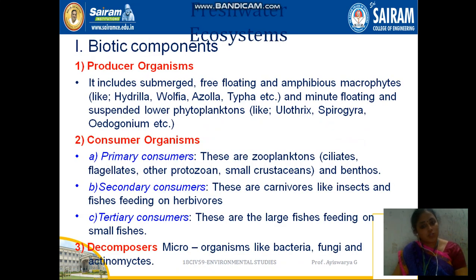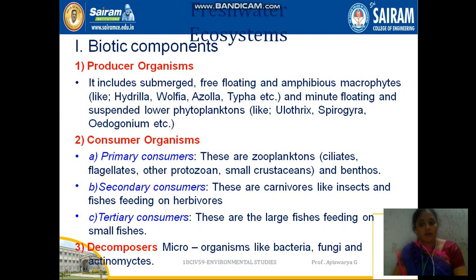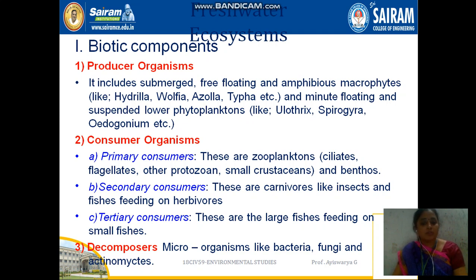The next ecosystem is the freshwater ecosystem, which again has biotic and abiotic components. Producers include submerged and free-floating macrophytes like Hydrilla, Azolla, and Typha, as well as suspended phytoplankton. Primary consumers include benthos and zooplankton. Secondary consumers are insects that feed on primary consumers.